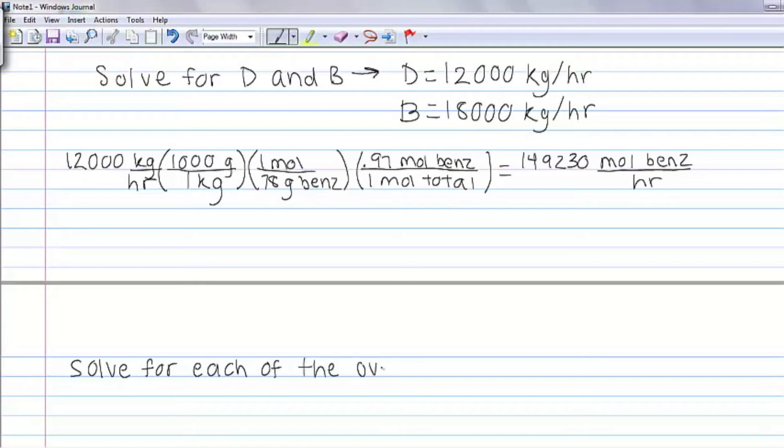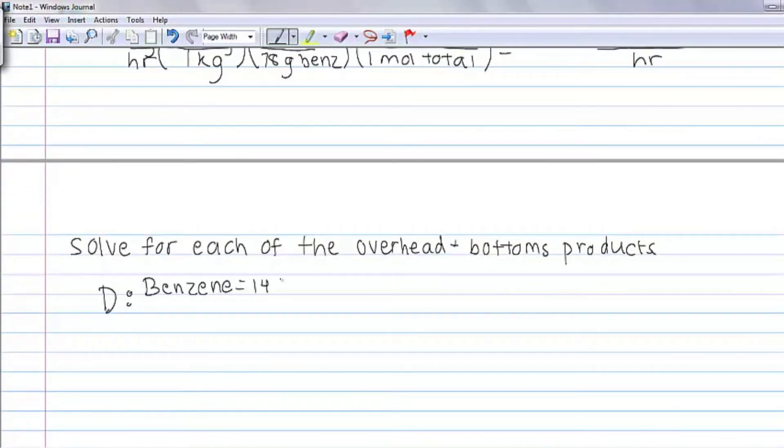We can separate the product streams into their mass compositions, then convert to moles to get the total moles of overhead and bottoms product per hour.